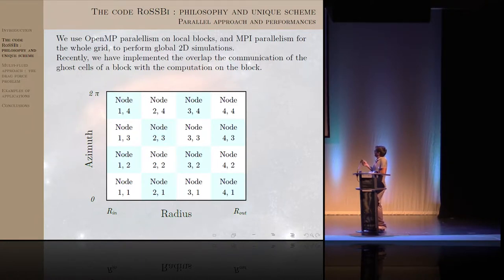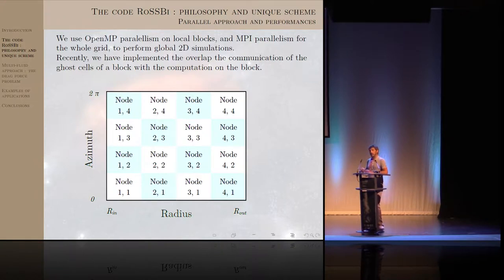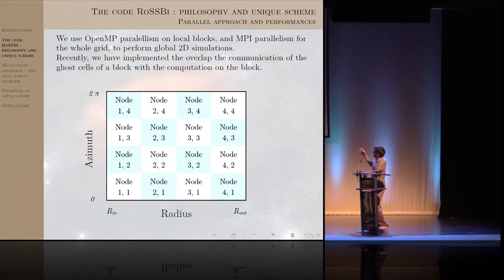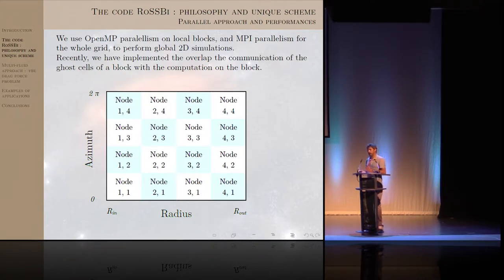Here I show how we parallelize the code. The parallelization is based on discretization of the domain. You have the radius of the disk on one axis and the azimuthal extent on the other — periodic from zero to two pi, representing the full disk in a kind of square layout. This domain is split into 2D patches, 2D blocks distributed to different nodes — here for 16 nodes as an example. Each node computes the evolution of the grid cells in its block and exchanges only ghost cells used for the scheme.